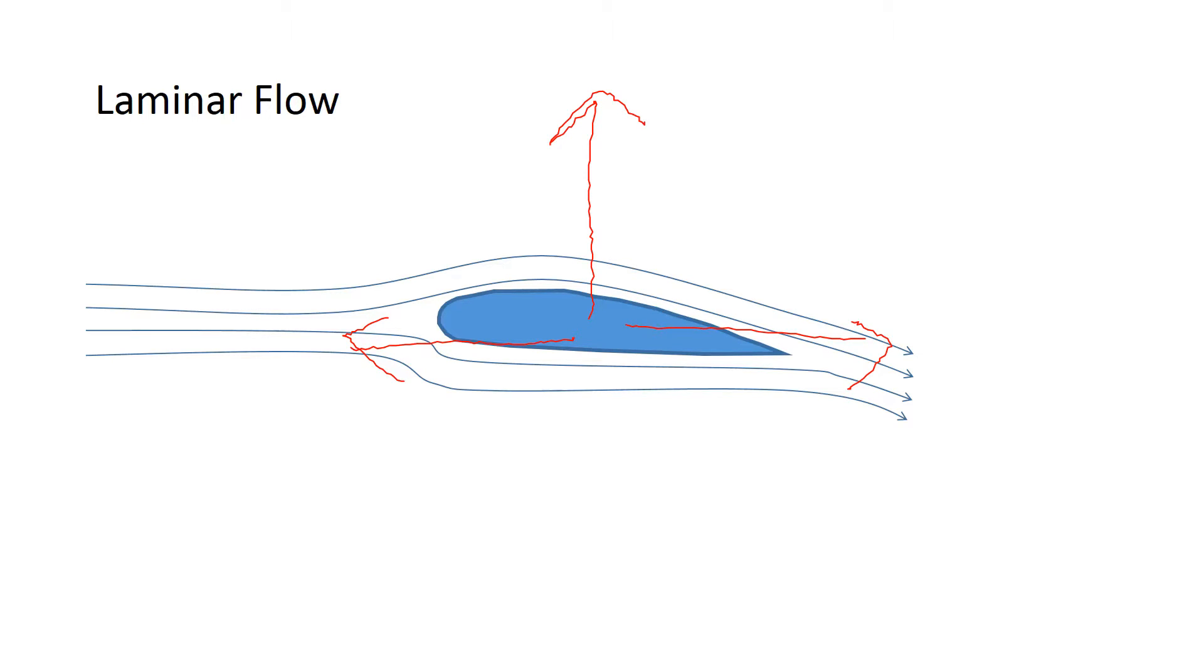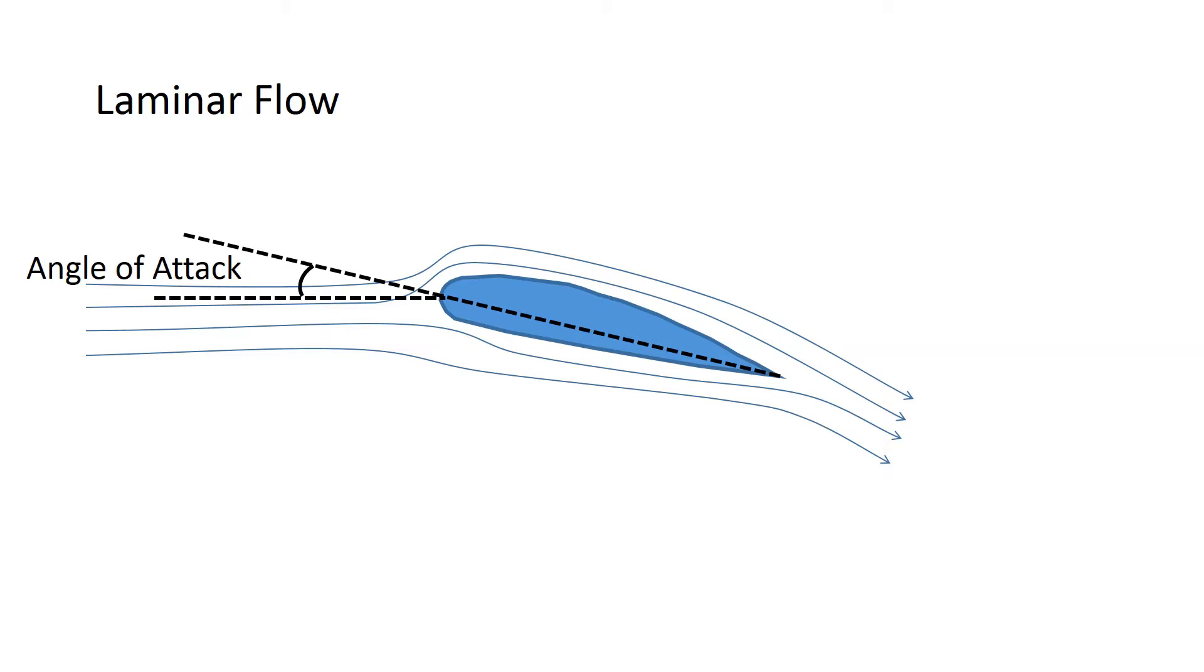The airflow over the wing is smooth, and this is what we call laminar flow. Here we've increased the angle of attack, the angle of the wing with the airflow.